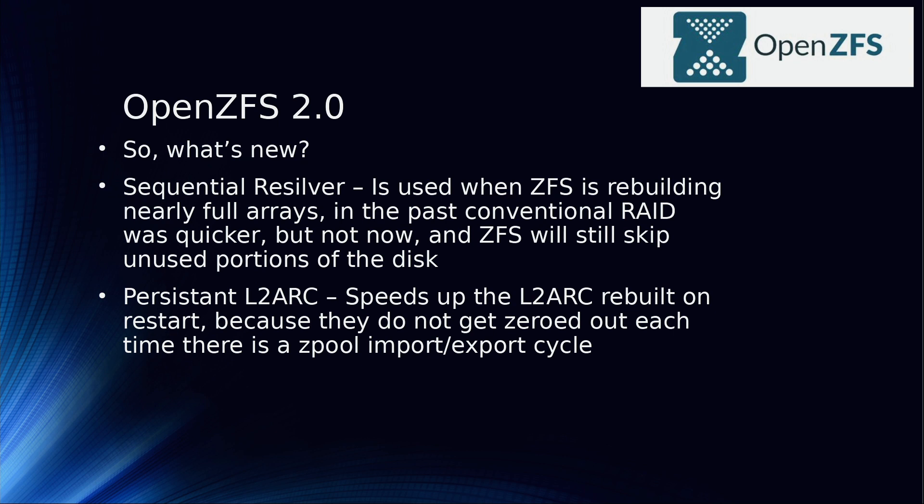The other feature is L2ARC. In the past, those have not been persistent — they had to rebuild every time you do a ZFS export and ZFS import cycle. That's changed. There's now a persistent version of the L2ARC, so once that cache gets built up, it gets reused. Caching is always an issue in terms of how you clean it out, update it, and make sure that it's fresh.